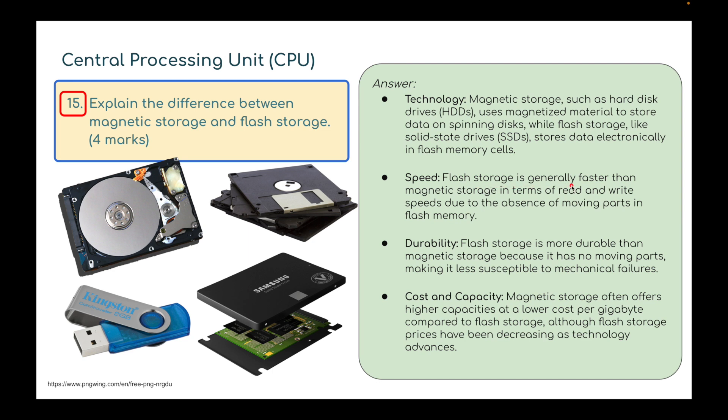Speed: flash storage is generally faster than magnetic storage in terms of read and write speeds due to its absence of moving parts in flash memory. It's reading from a chip whereas this is like a spinning disk with pits and troughs, and it's got to spin up to find the information. This is deemed older technology. Durability: flash storage is more durable than magnetic storage because it has no moving parts, making it less susceptible to mechanical failures.